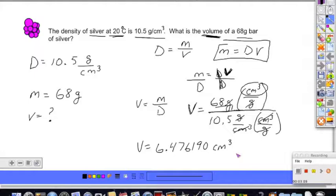If you're going to round this appropriately to sig figs, volume equals 6.5 cubic centimeters. Uncircle your answer.